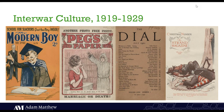Literature is one of the highlights of Interwar Culture, with periodicals targeting a very broad spectrum of audiences. Chums, Schoolgirls Weekly and The Modern Boy provide fantastic insight into children's literature of the era, while Peg's Paper and Woman's Weekly exemplify the more sensationalist fiction of periodicals aimed at a more working class audience. And while The Dial addressed a more highbrow intellectual audience, titles such as Time and Tide and The Strand championed a middlebrow literary culture that became increasingly popular throughout the 1920s.